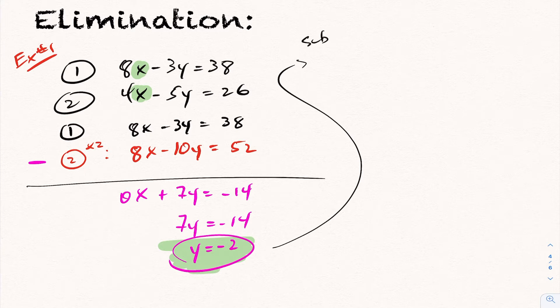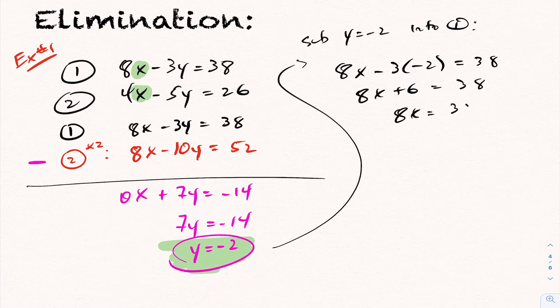I'm going to go ahead and sub it into 1. So I'm going to sub y is negative 2 into equation 1, in which case everywhere I see a y I change it to a negative 2. And you get 8x plus 6 is 38. And then just going ahead and solving this, divide across by 8, you end up getting x is 4. So in this case here, therefore, in this example, the point of intersection is 4, negative 2.